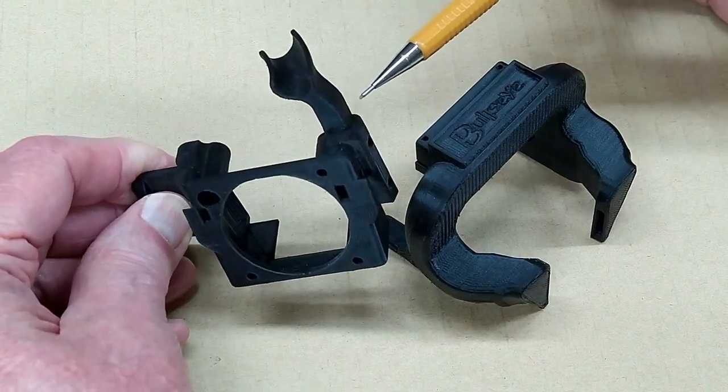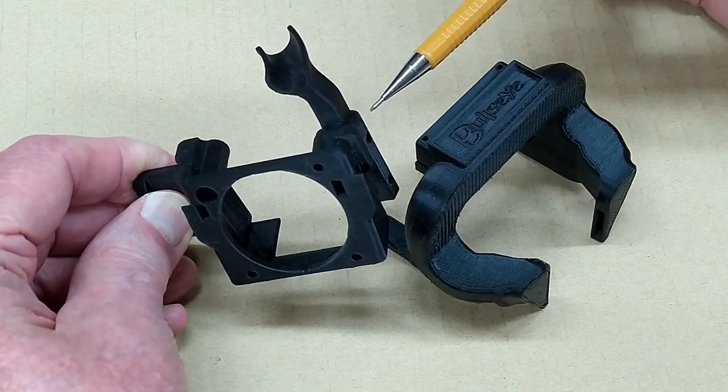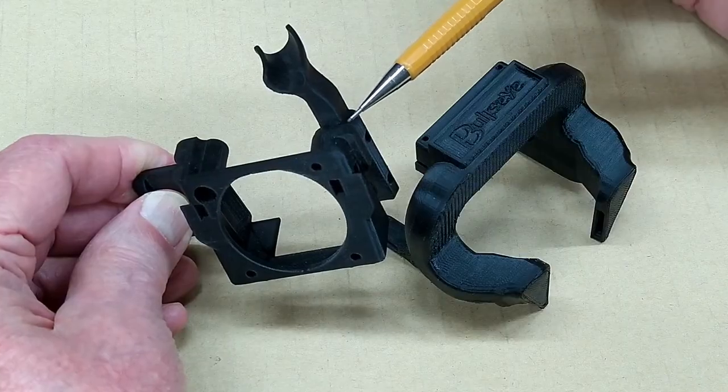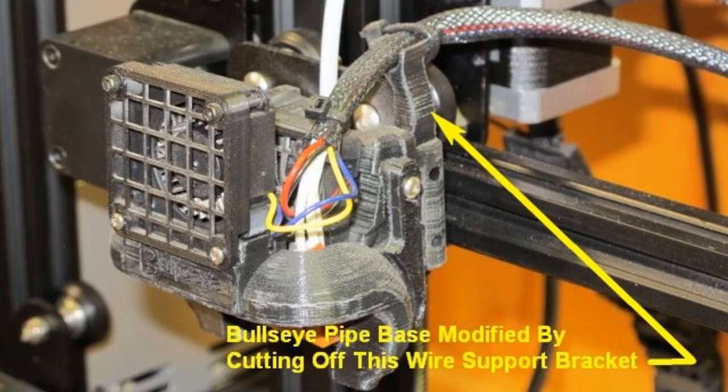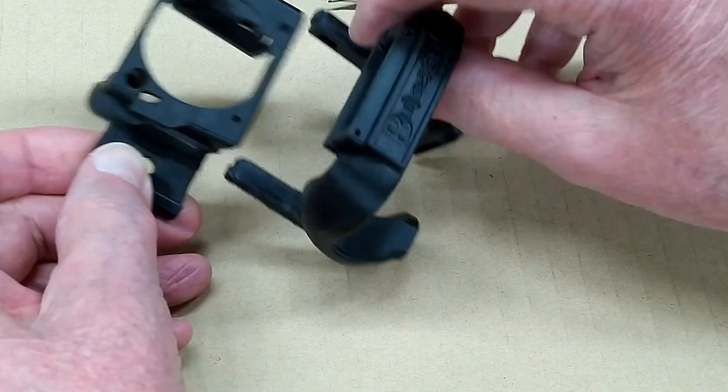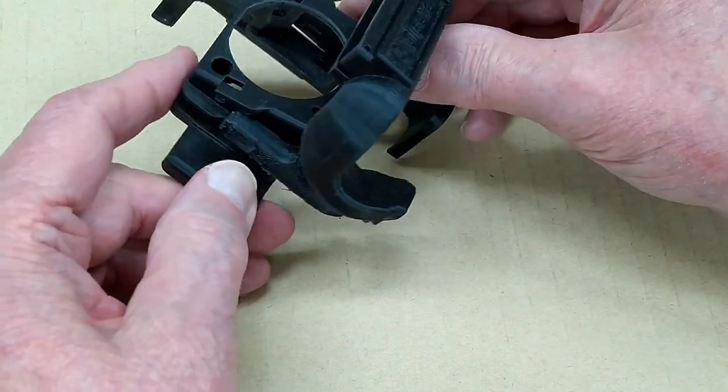As I will show in another photo, this is in the way of the direct drive extruder. So this needs to be cut off and smooth. And then this goes on here like that.